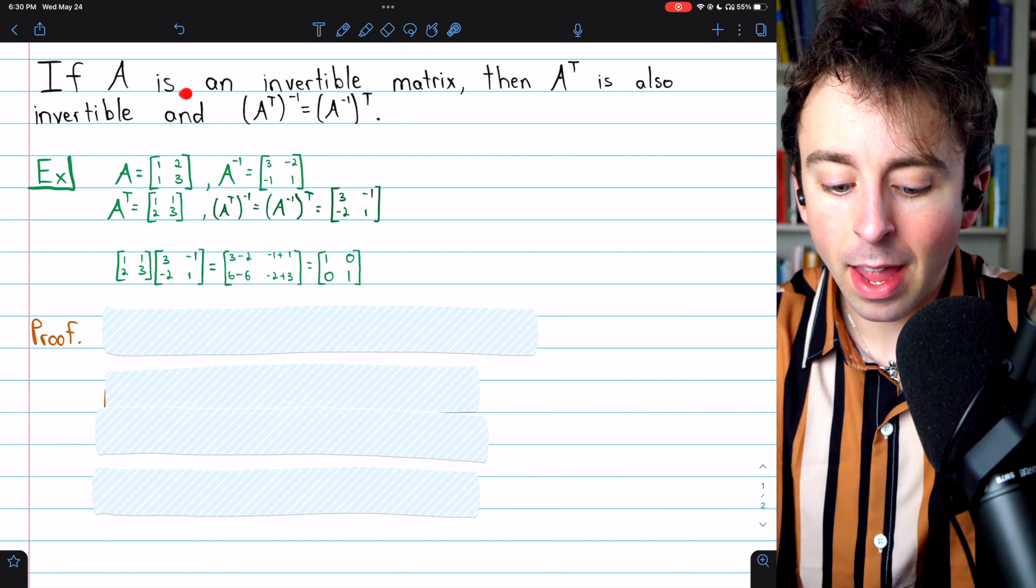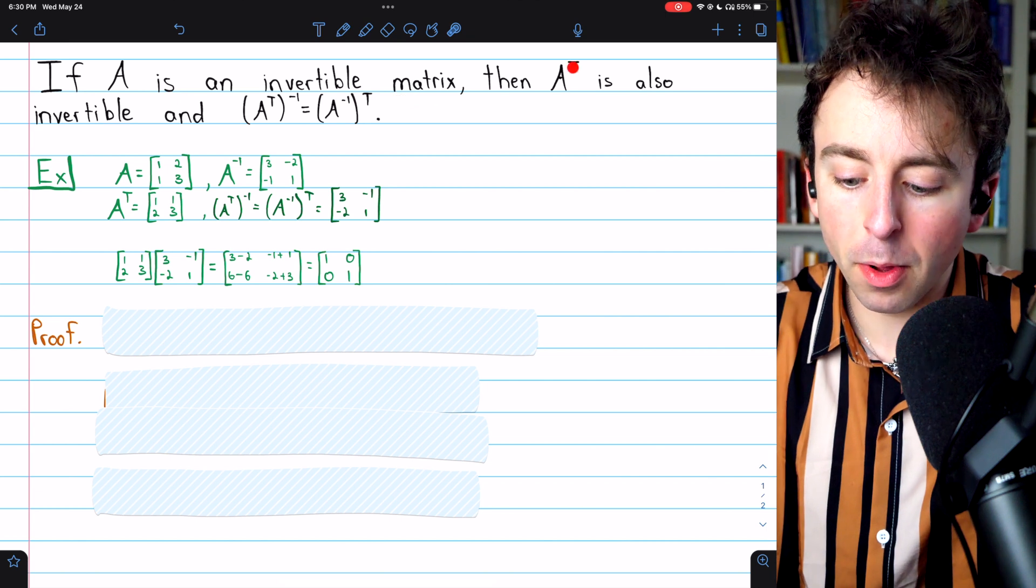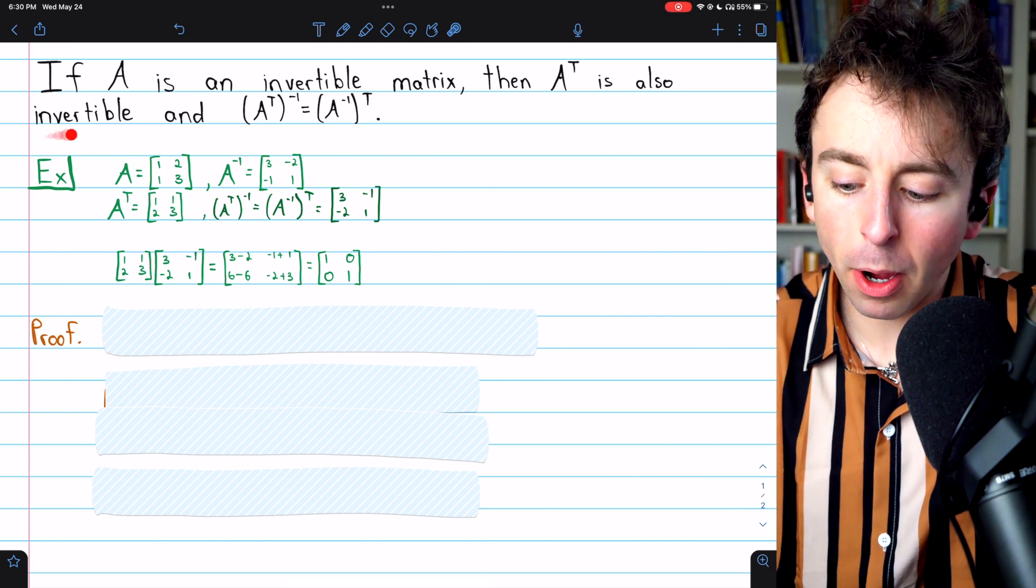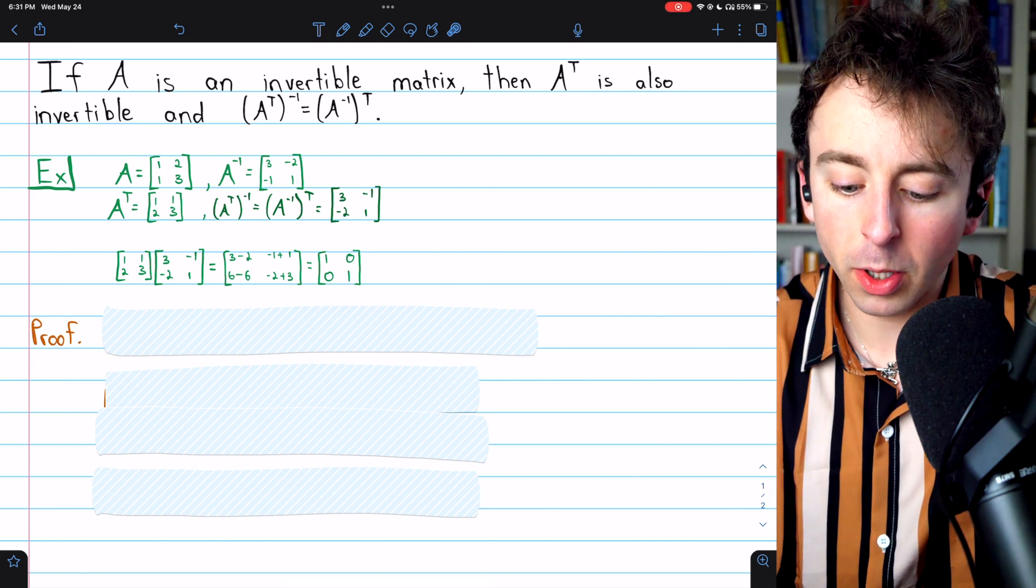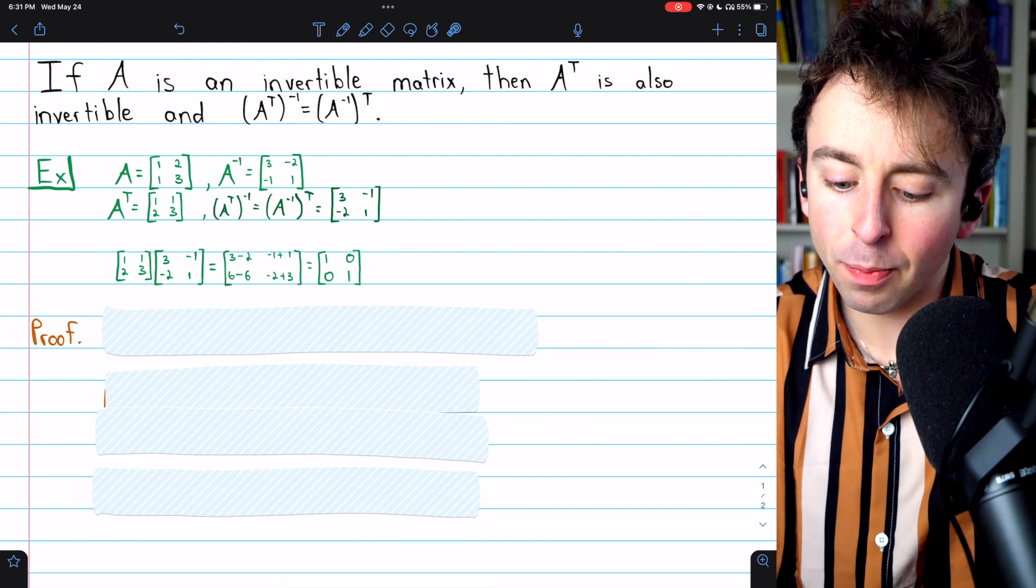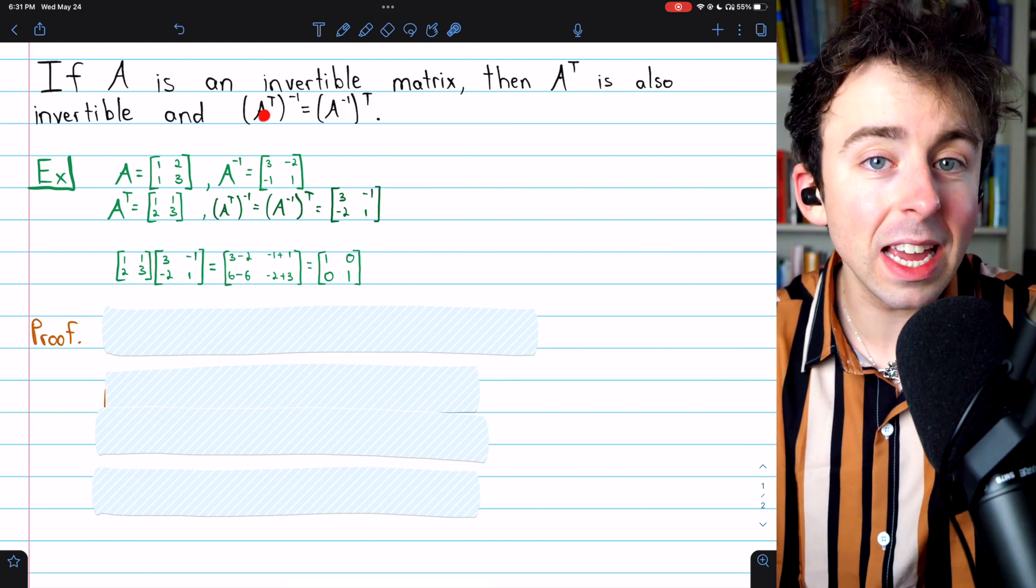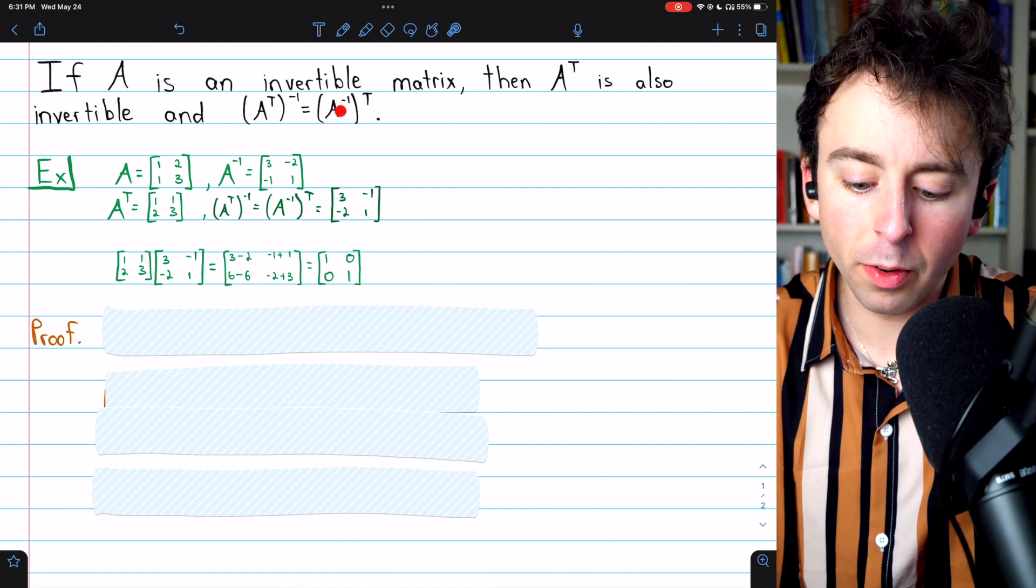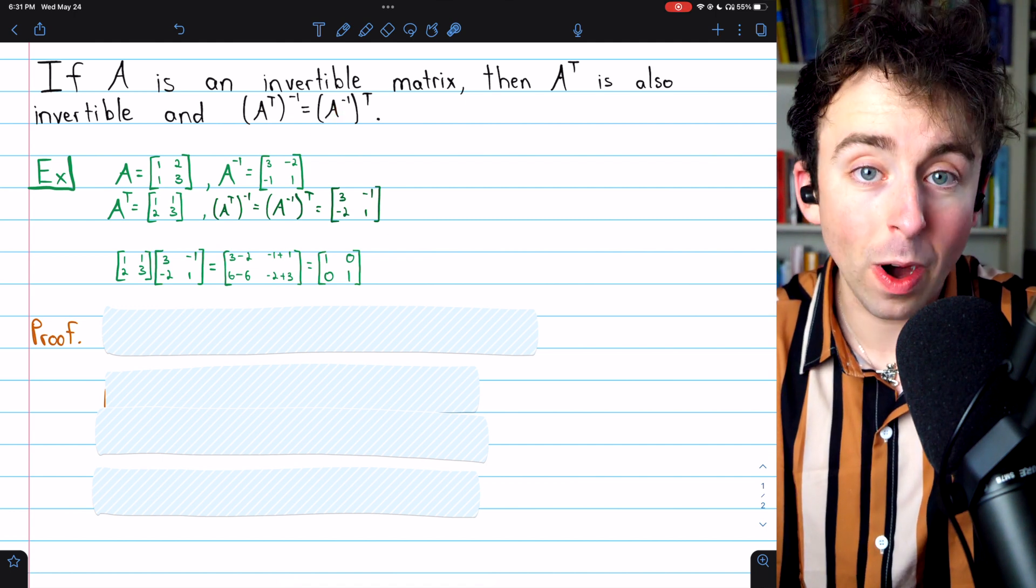Here's what we're going to prove today. If A is an invertible matrix, then its transpose is also invertible, and the inverse of the transpose is actually just the transpose of the inverse. So A transpose inverse equals A inverse transpose.